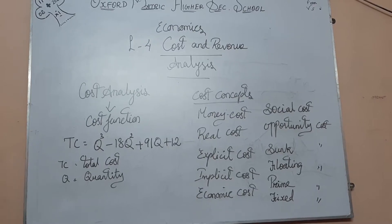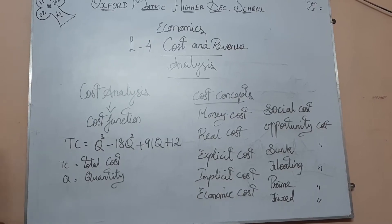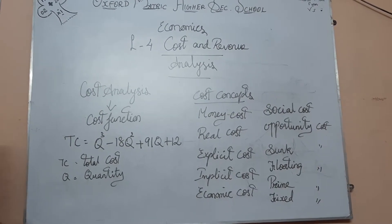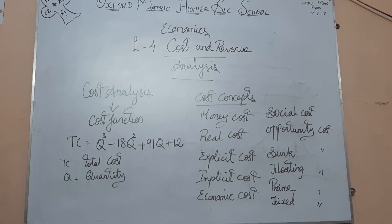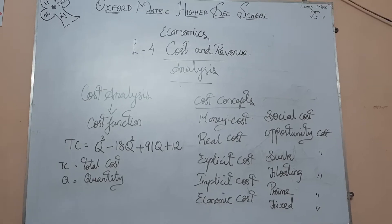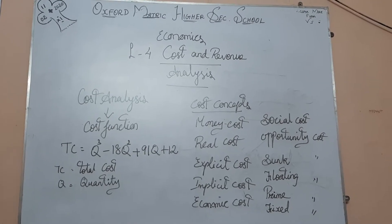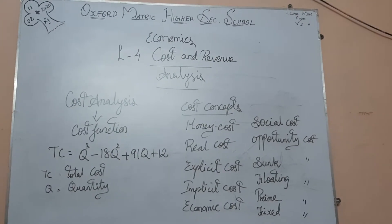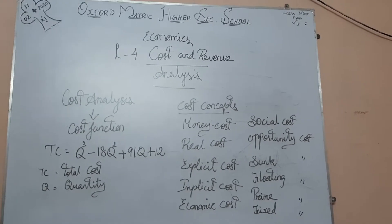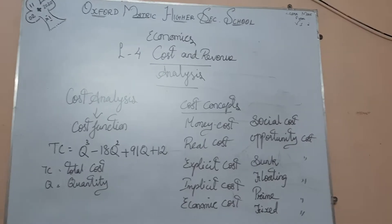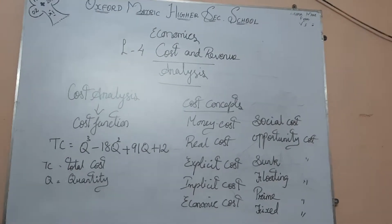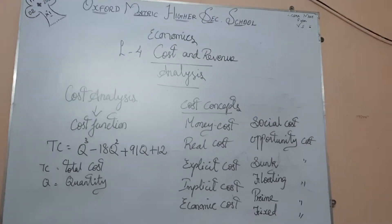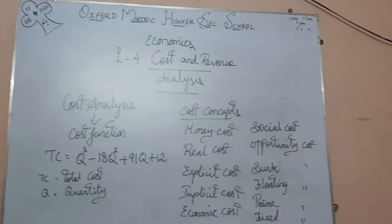Hi kids, today we are going to enter into the new chapter: Cost and Revenue Analysis. Cost means what we are spending to give the production — that is called a cost.